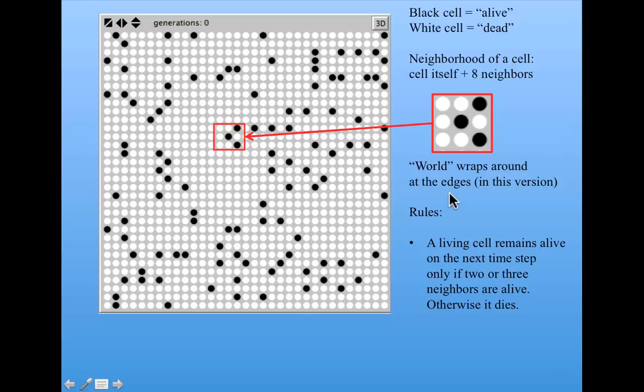Here are the rules that each cell obeys. The first rule is that a living cell, that is, black cell, remains alive on the next time step, only if two or three neighbors are alive. Otherwise, it dies.